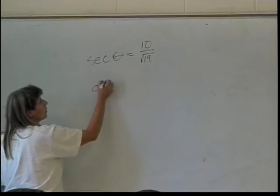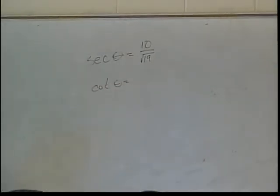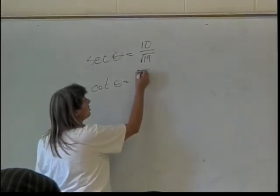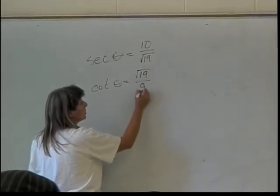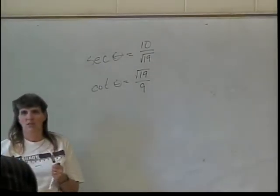And then the last one was the cotangent of theta. What's that? Root 19 over 9, because I take my tangent and I flip it over. Everybody up here with that? Wasn't too bad?